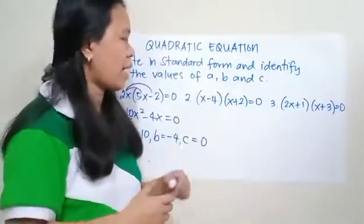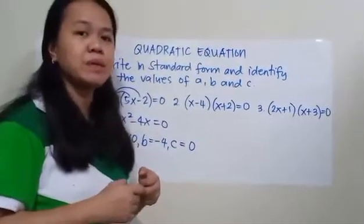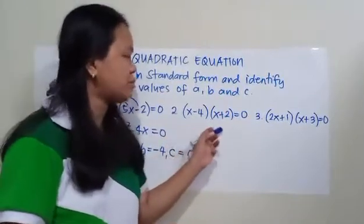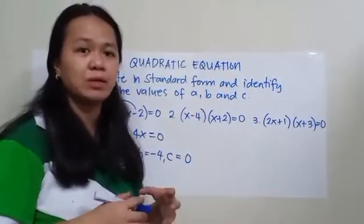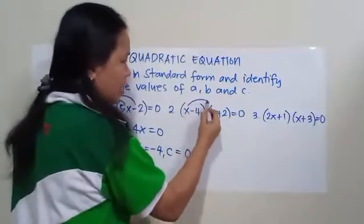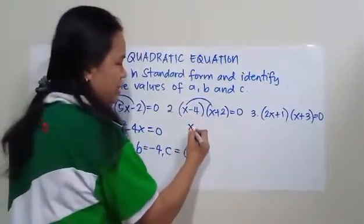So number 2, you have the quantity x minus 4 times the quantity x plus 2 equals 0. So for us to be able to write this one in standard form, we're going to use the FOIL method to multiply the two binomials. So multiply first the first terms. So x times x is x squared.